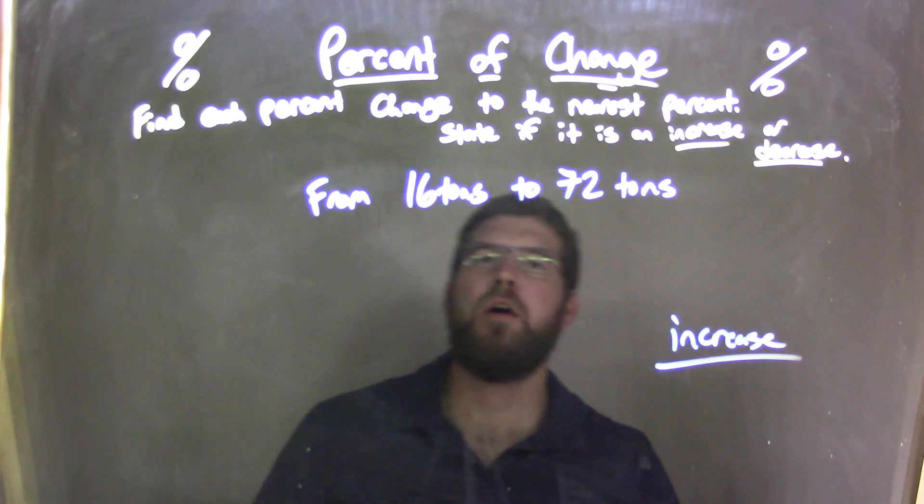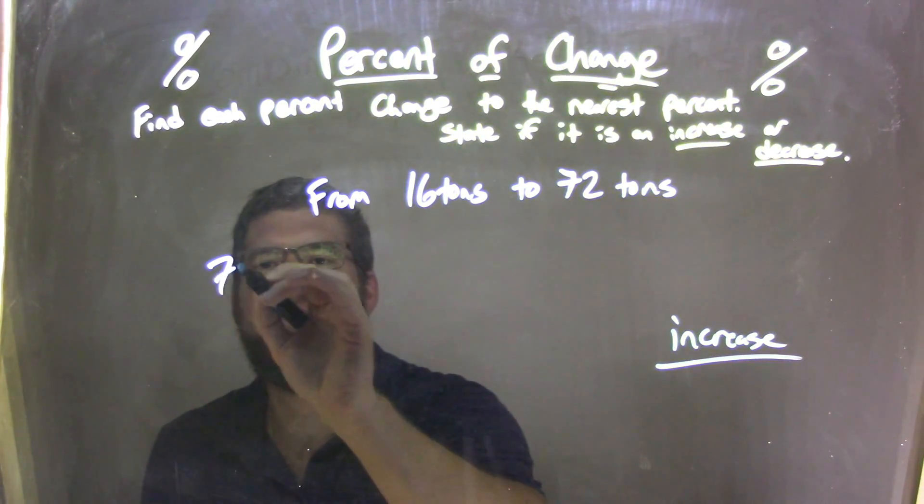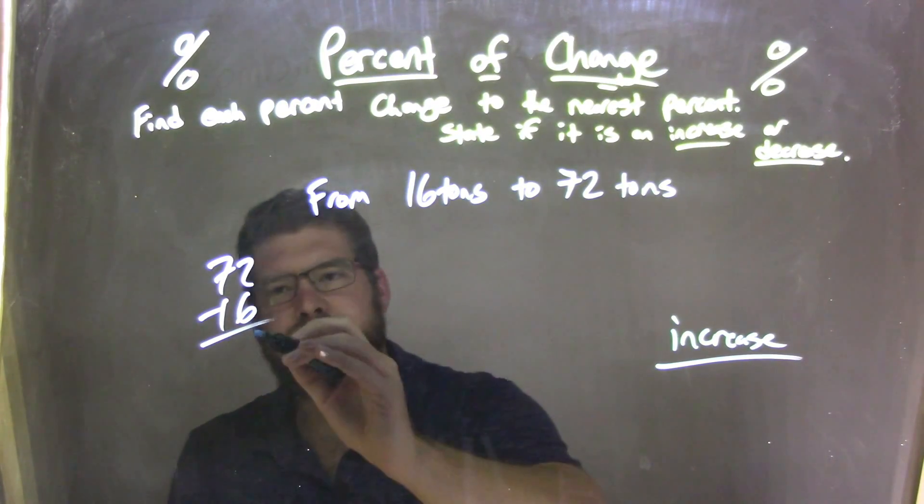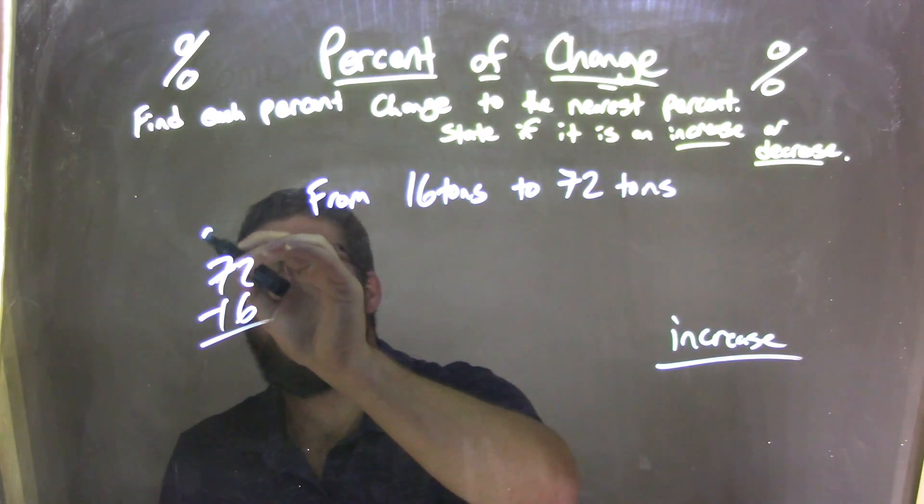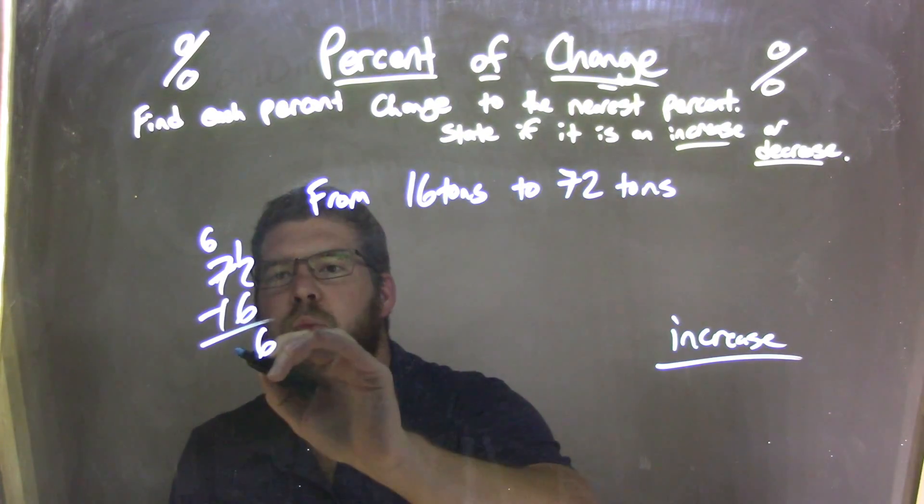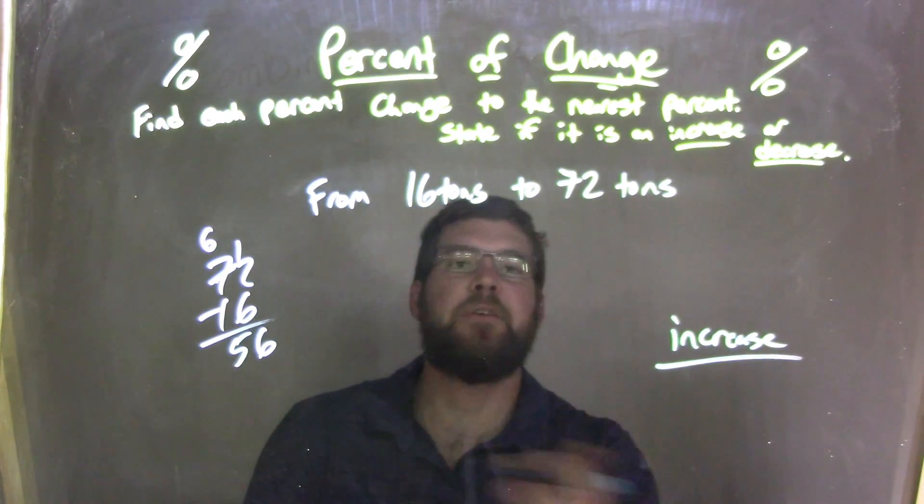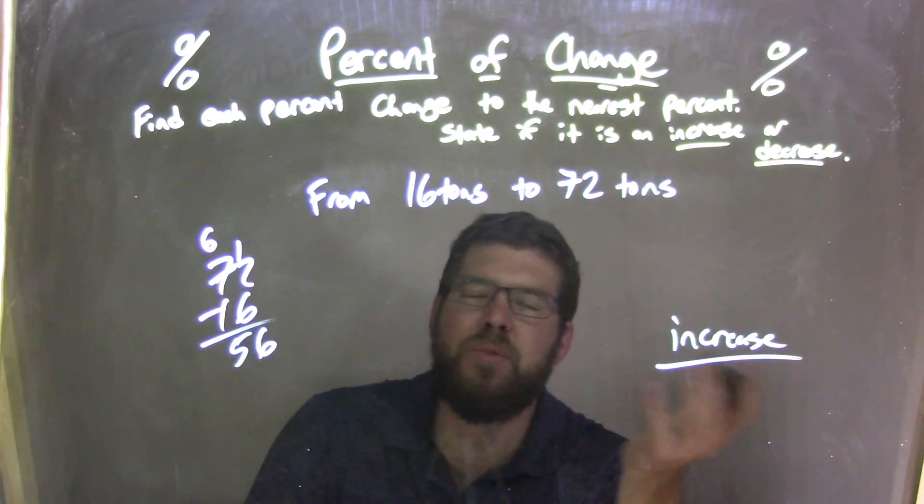Increase. So now we have to take 72 and subtract 16. We need to find the difference. 72 minus 16 here. Can't do 2 minus 6, so make that a 6 up here. 12. 12 minus 6, that's easy, that's a 6. 6 minus 1 is a 5. So we have 56. There's 56 ton difference, 56 ton increase between the two.